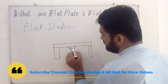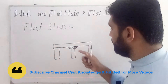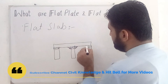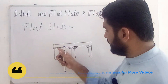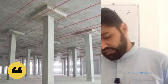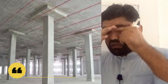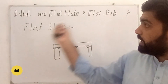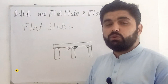In a flat slab, there will be some thickened portion of the slab in the form of a column capital or drop panel. So the whole thickness of a flat slab will not be uniform — there will be some thickened portion near the column. You can also see in the picture that there is some thickened portion in the slab just near or just above the column. This is the difference between flat plate and flat slab.